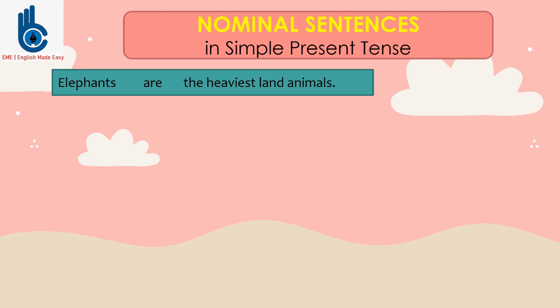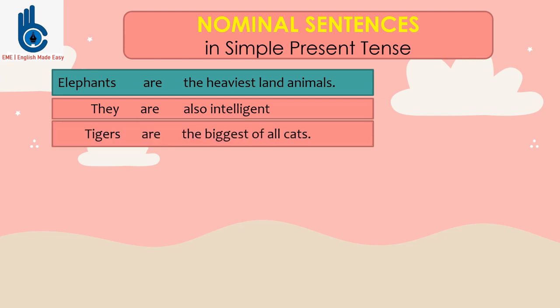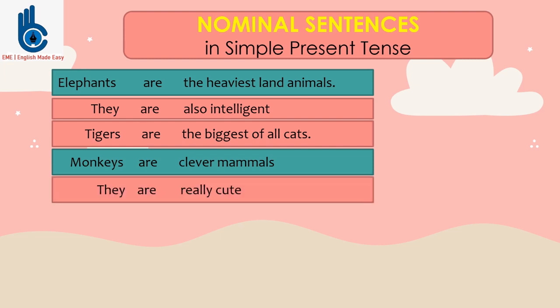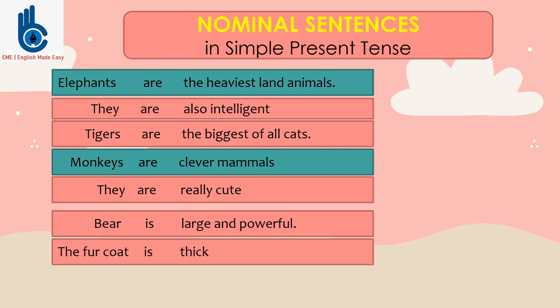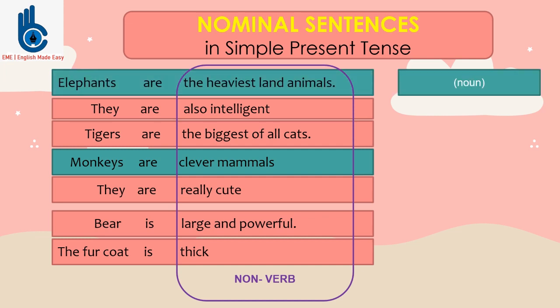Elephants are the heaviest land animals. They are also intelligent. Tigers are the biggest of all cats. Monkeys are clever mammals. They are really cute. Bear is large and powerful. The fur coat is thick. As we can see here, there is no verb in all of those sentences. Tidak ada kata kerja sama sekali. The heaviest land animal — they are nouns.